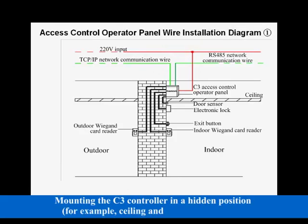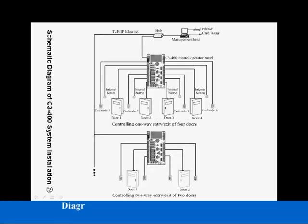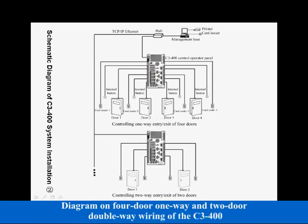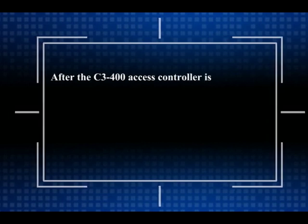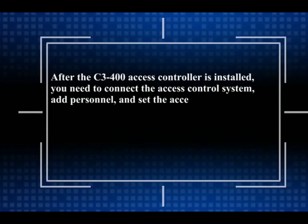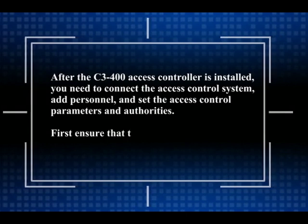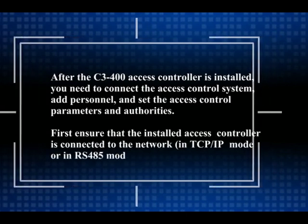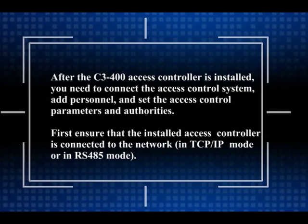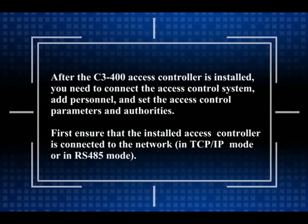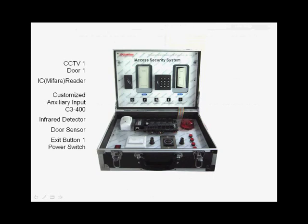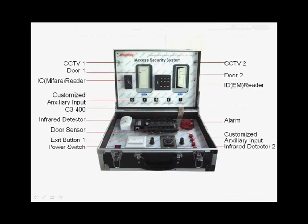Mounting the C3 controller in a hidden position, for example, sealing in a weak current well. Diagram on 4-door 1-way and 2-door double-way wiring of the C3-400. After the C3-400 is installed, you need to connect the access control system, add personnel, and set the parameters and authorities. First ensure that the installed C3-400 is connected to the network. By taking the demonstration box of the C3 controller system as an example, the following section describes software settings and usage of the C3-400.